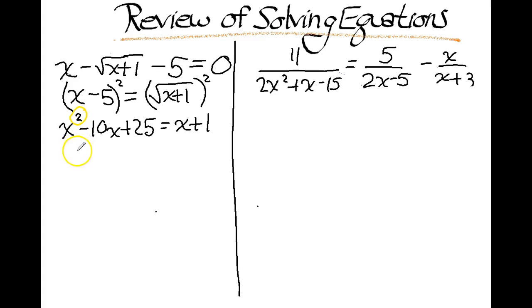So let's move everything to one side. So we have an x squared minus 11x plus 24. And ask ourselves the question, are there factors of 24, positive 24 that add to negative 11? And I say there are. Negative 8 times negative 3 is a positive 24 and they add to negative 11. So I am going to factor this.